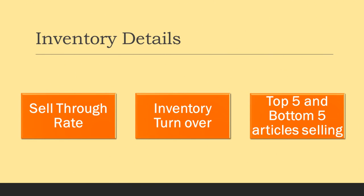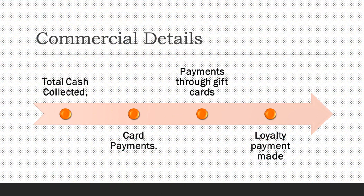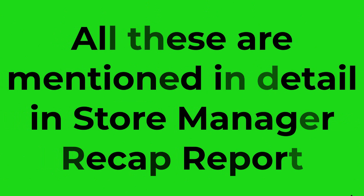The store manager recap report also mentions the inventory present in the store, the sell-through rate, and the inventory turnover. It also includes the top 5 and bottom 5 articles selling across all departments. Additionally, it covers all commercial aspects of the store such as total cash collected, card payments made, payments through gift cards, and loyalty payments.